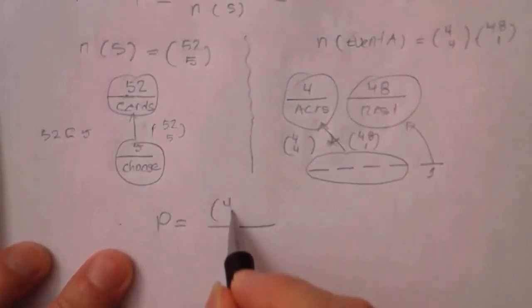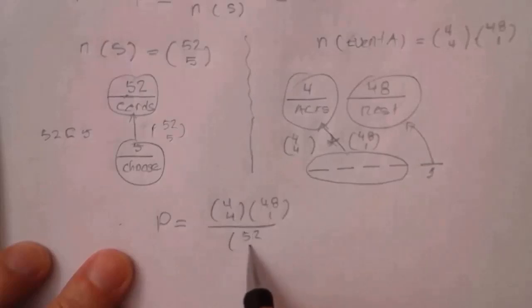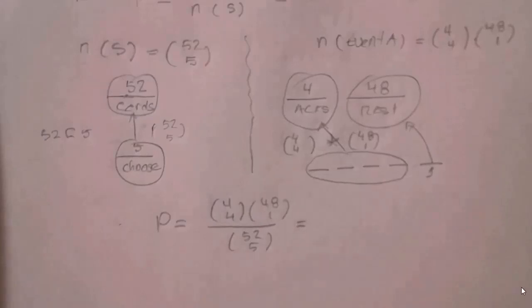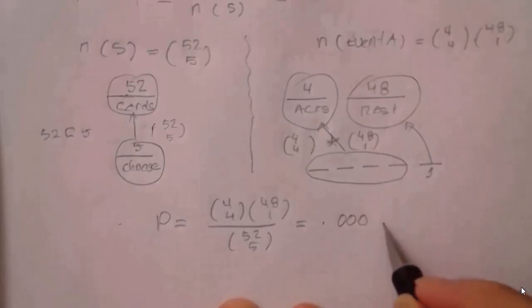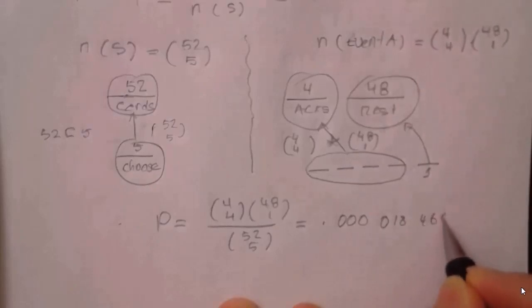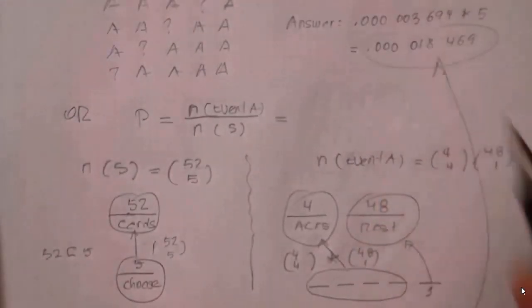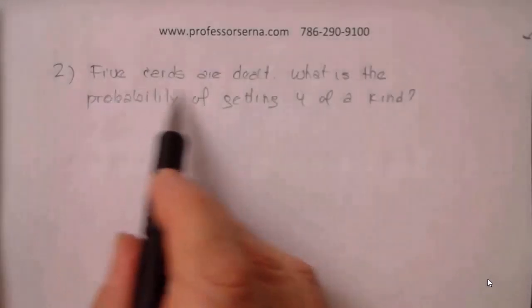So the probability is C(4,4) × C(48,1) divided by C(52,5). Plugging this into a calculator gives approximately 0.000018469, which is exactly the same number we got before — confirming both methods are correct.